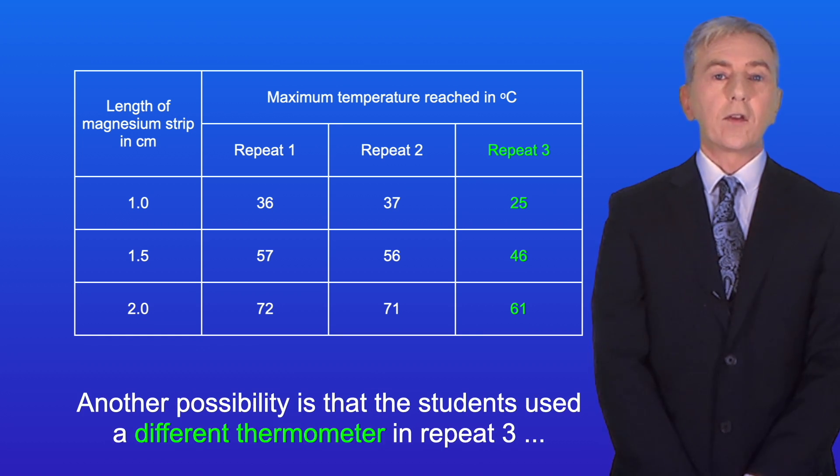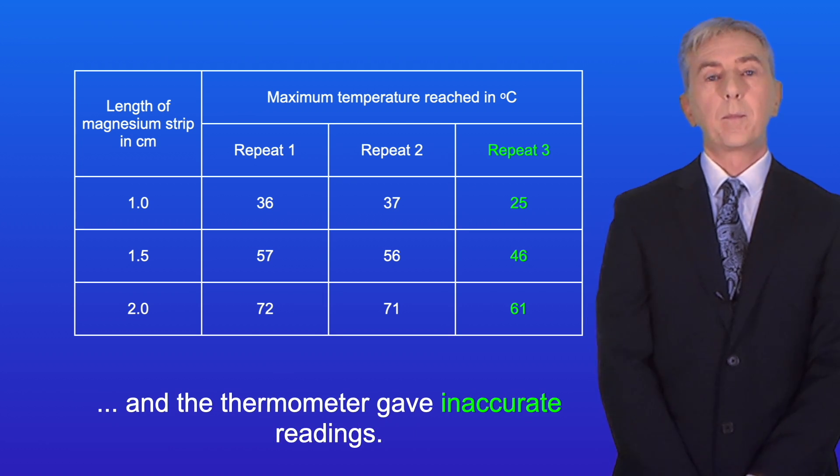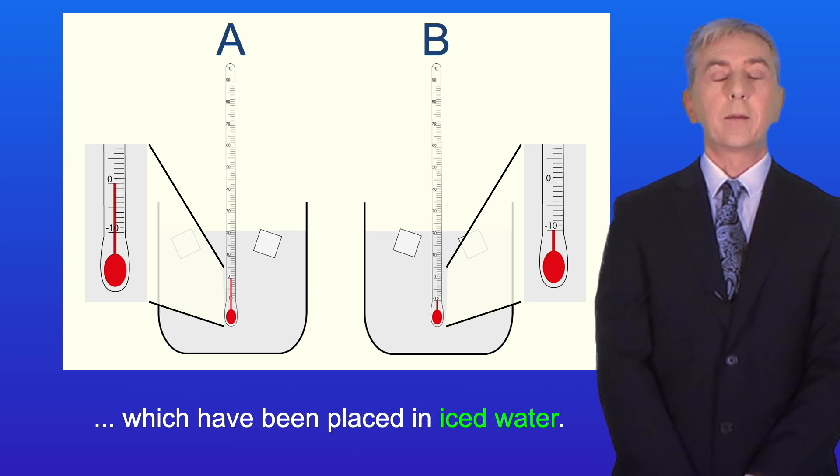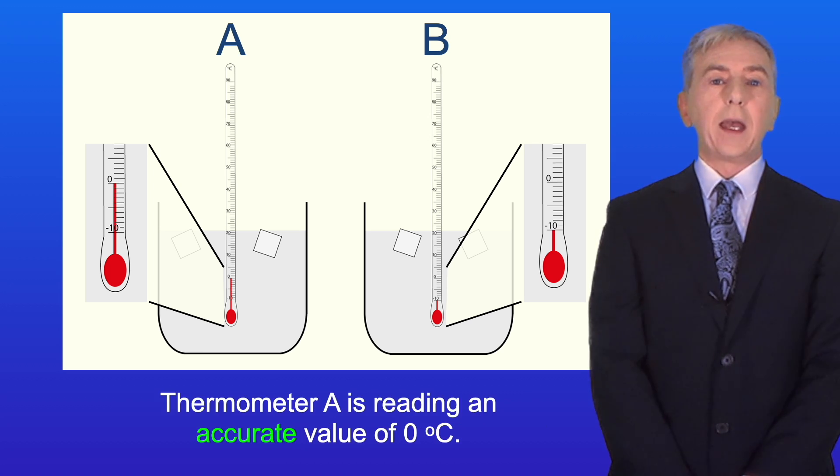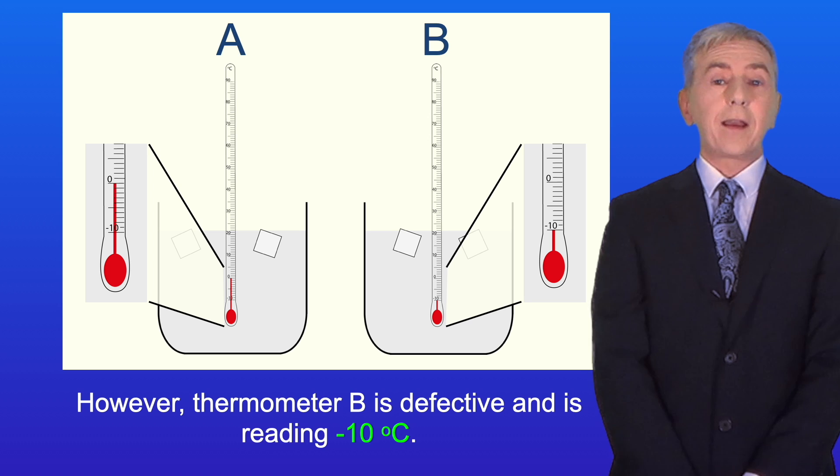Another possibility is that the students used a different thermometer in repeat three and the thermometer gave inaccurate readings. I'm showing you here two different thermometers which have been placed in iced water. Iced water has a temperature of zero degrees celsius. Thermometer A is reading an accurate value of zero degrees celsius. However, thermometer B is defective and is reading minus 10 degrees celsius.